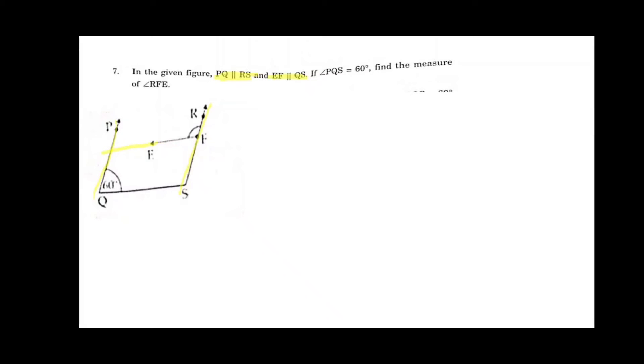We can extend EF as a ray FE, and FE is parallel to QS. So this is a parallelogram. Opposites are parallel to each other, and we know that opposite angles are also equal.